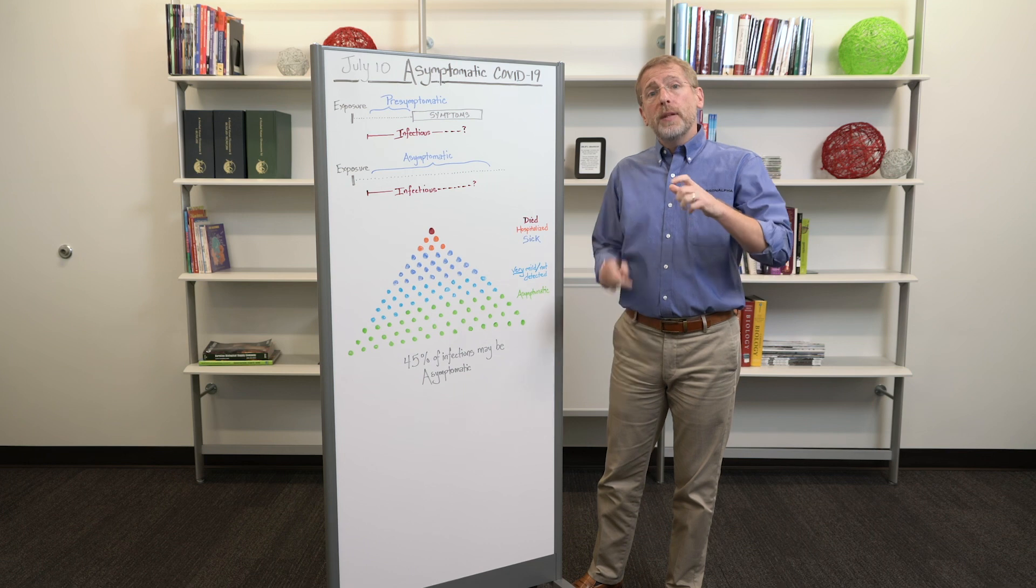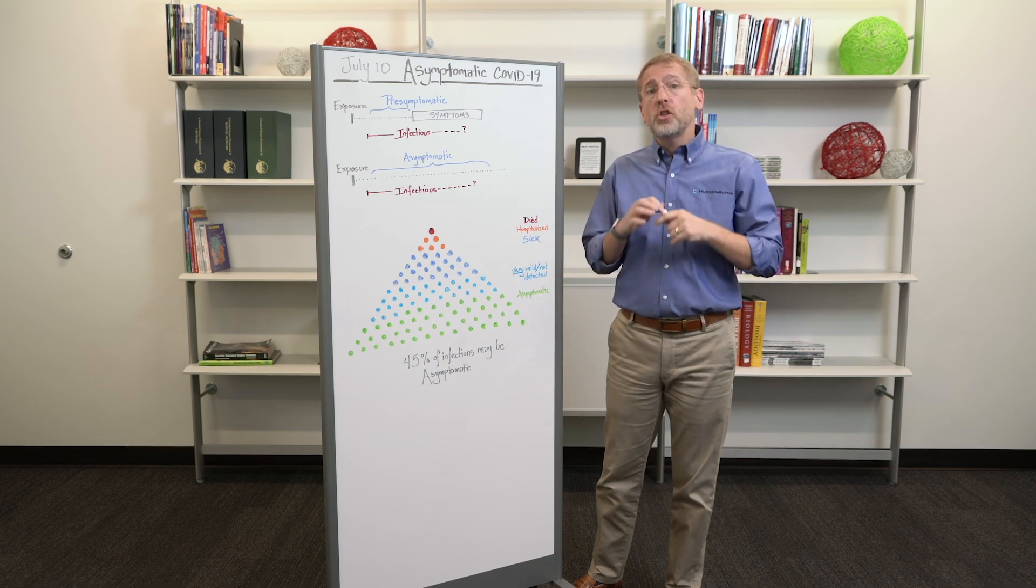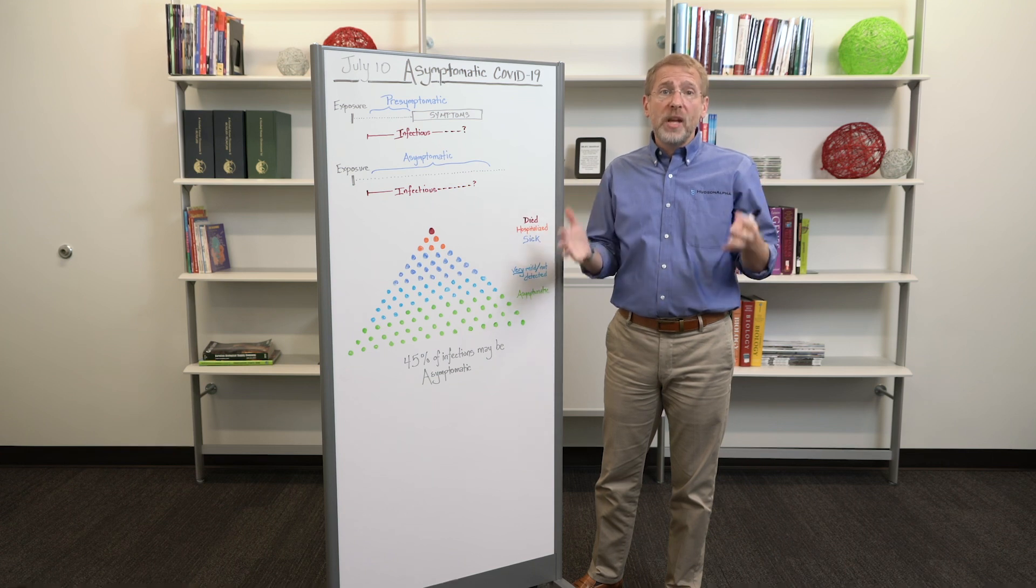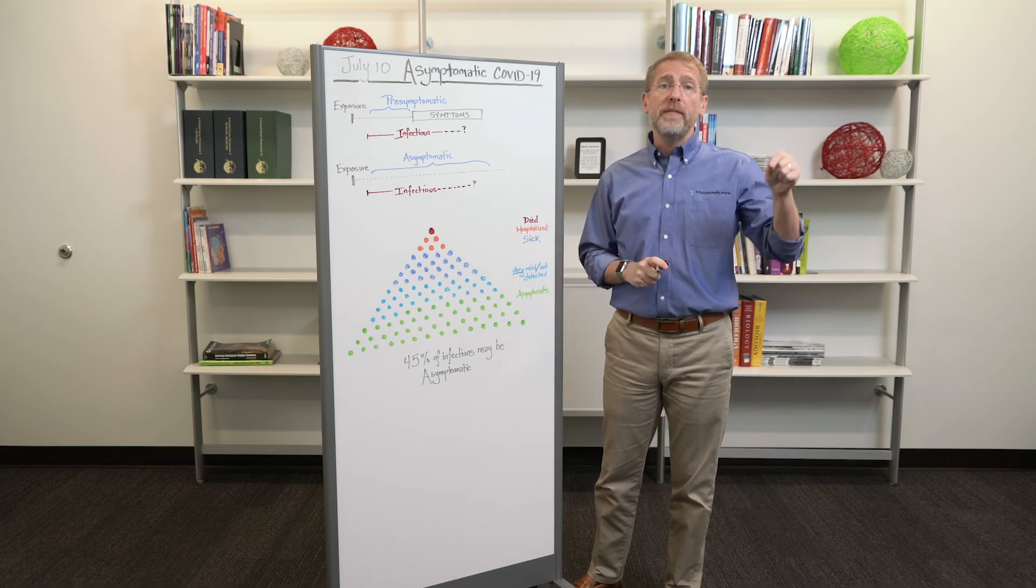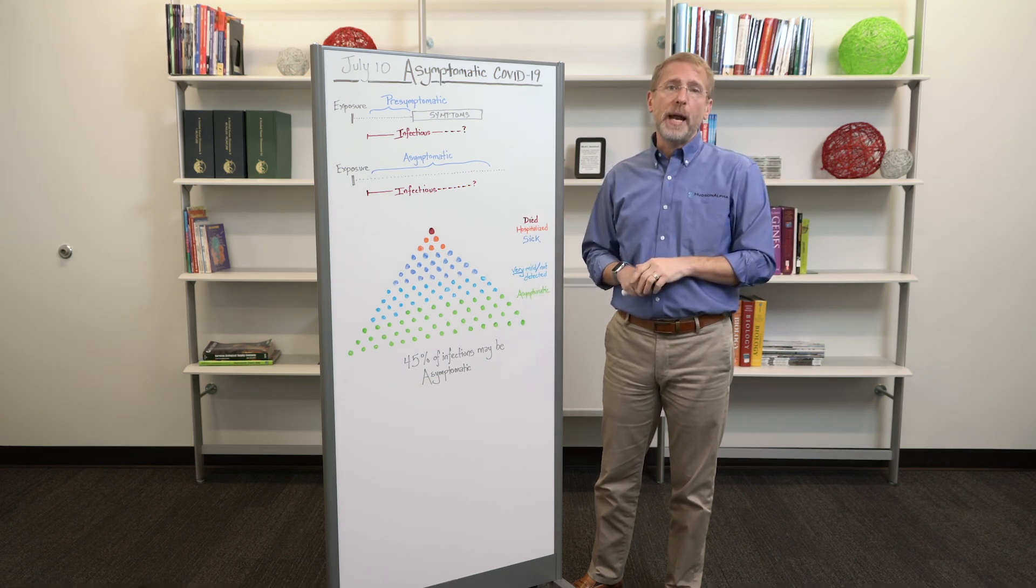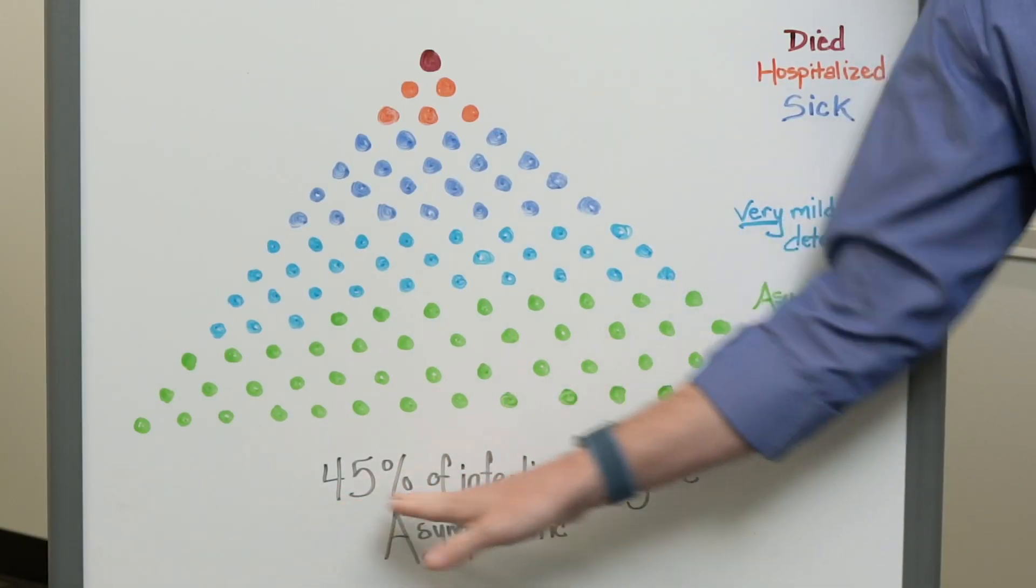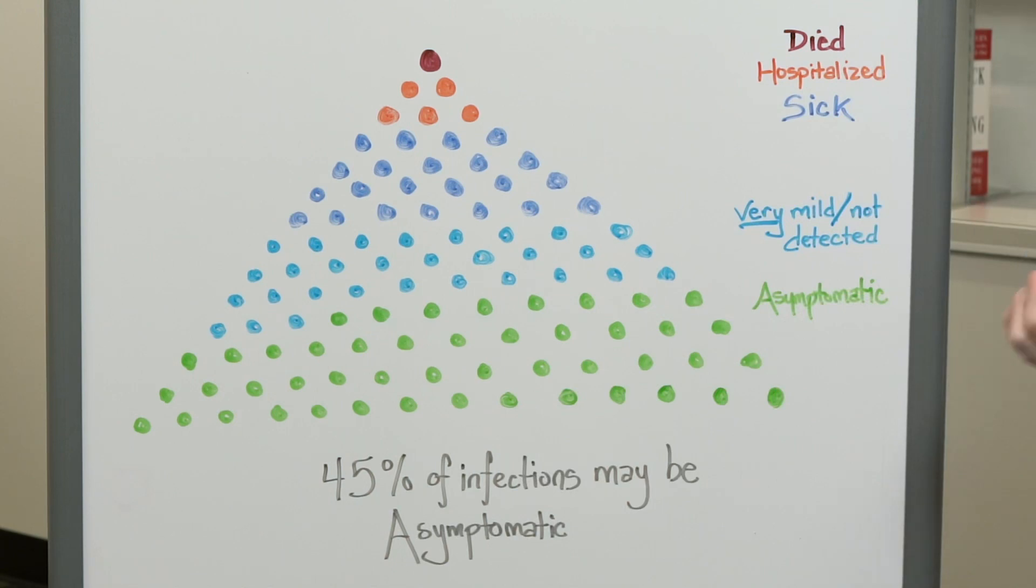That said, the data suggest that somewhere between 20 and 60 percent of individuals that are infected may be asymptomatic. 20 to 60 is a huge range. The data land somewhere, best guess, around 45 percent. So 45 percent of people that are infected may never have any visible symptoms.